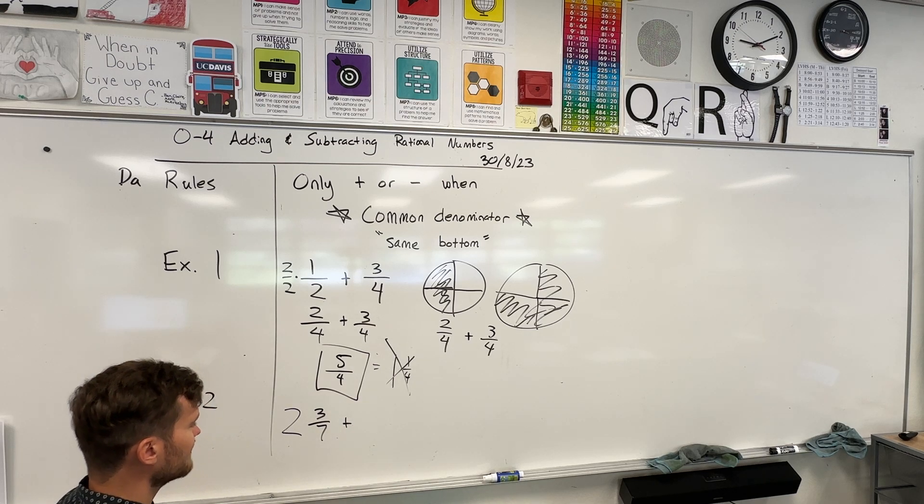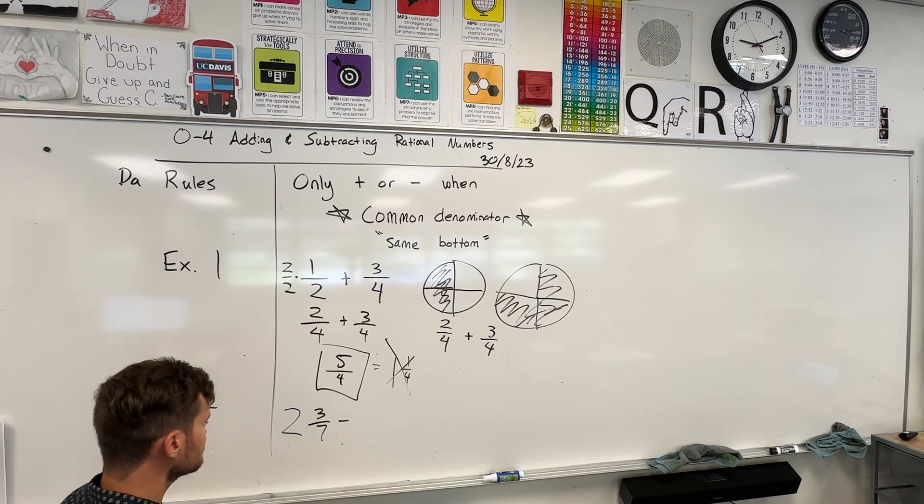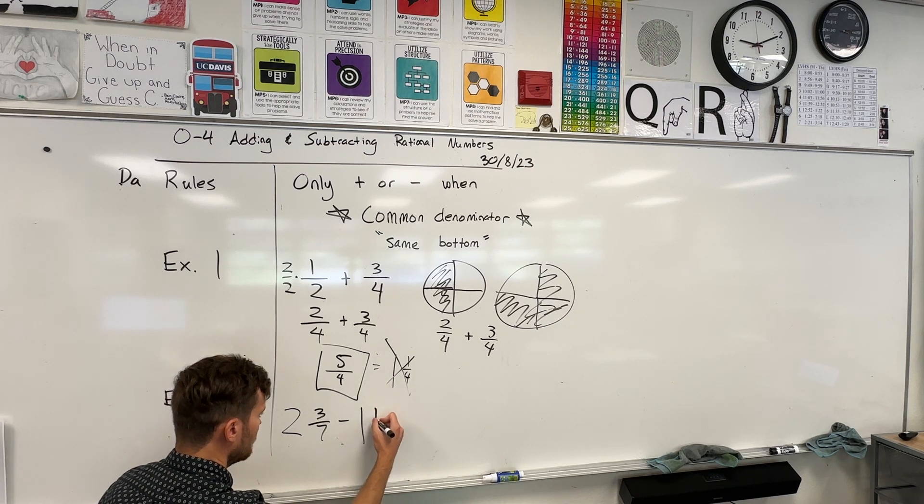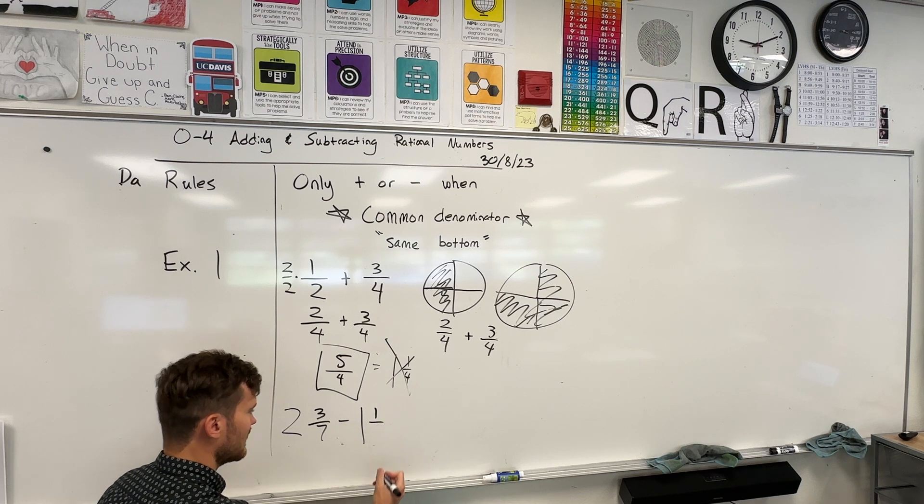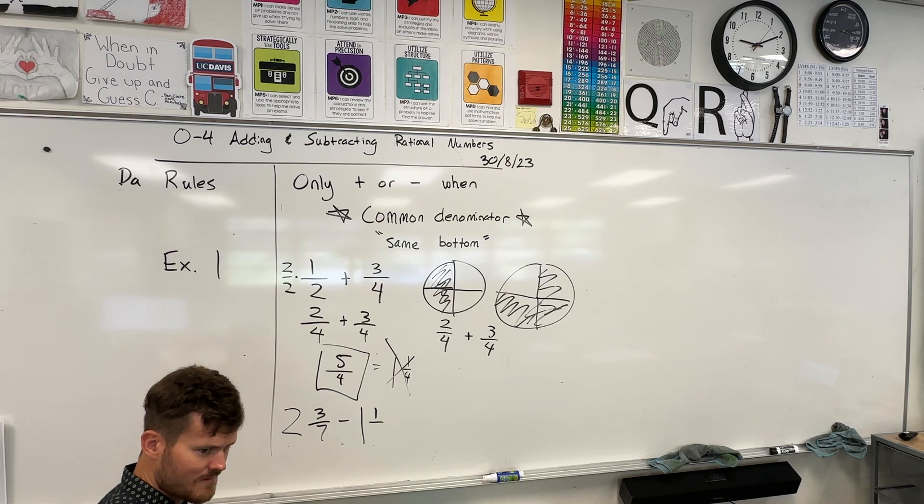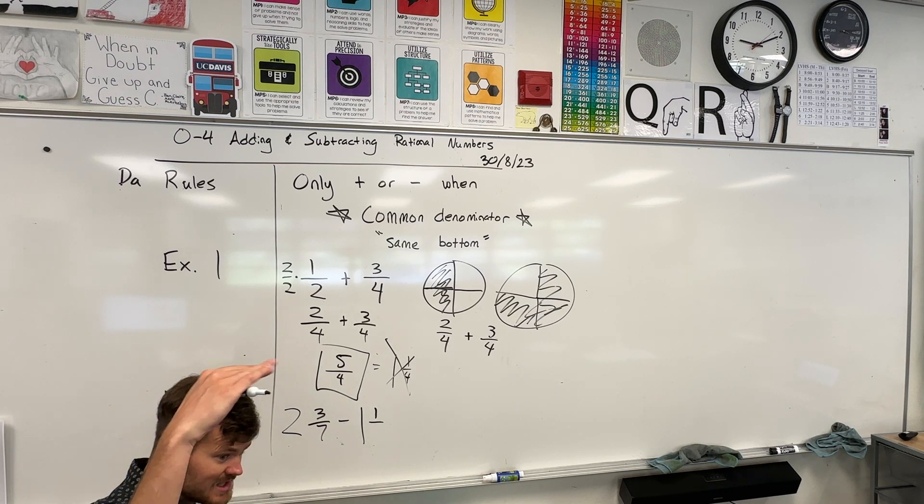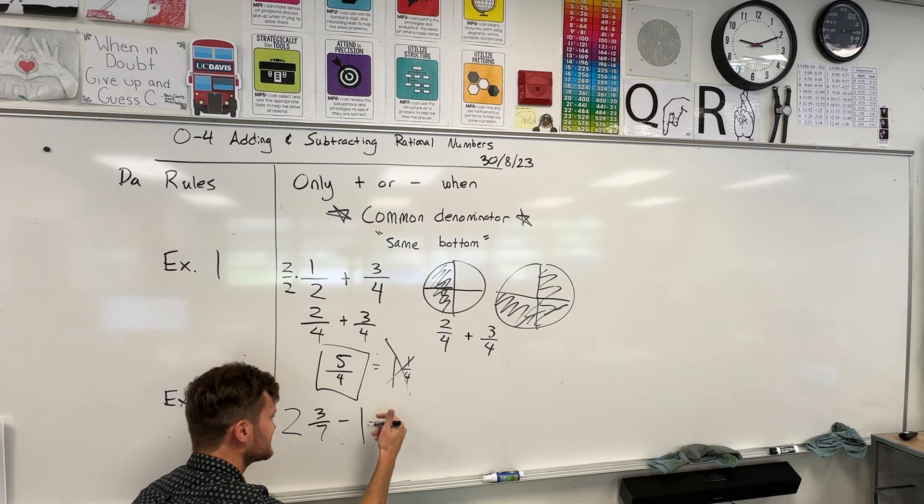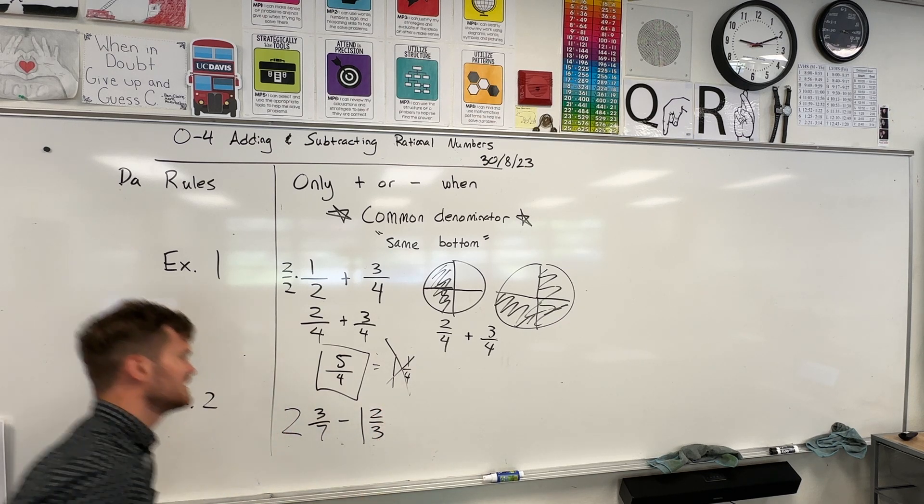Yes, you should know how to convert there, but more importantly you should know how to convert backwards, which brings us to Example Number 2. What if I do two and three-sevenths plus - I'm feeling a minus sign, we already did a plus sign - minus one and two-thirds? Should I make it really, really tricky or only a little bit tricky? You guys want to go like really spicy or just a little bit mild? Really spicy? I like it. Let's change it to two-thirds. All right, let's go.